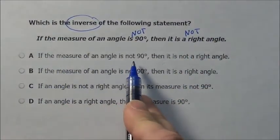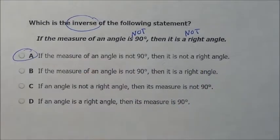So let's just look for that. If the measure of an angle is not 90, then it is not a right angle. Boom! Choice A.